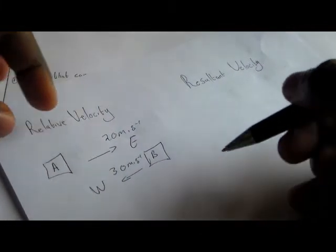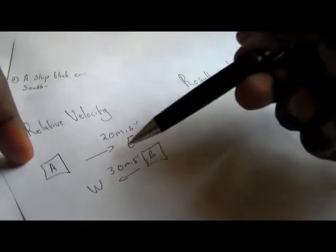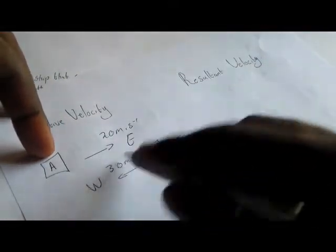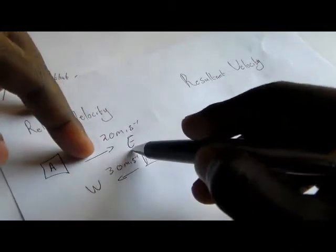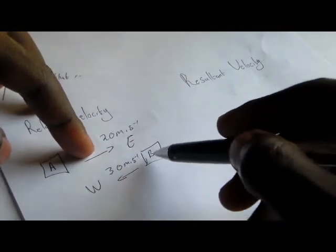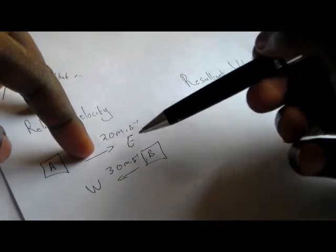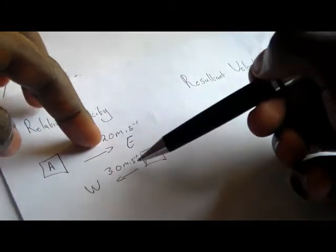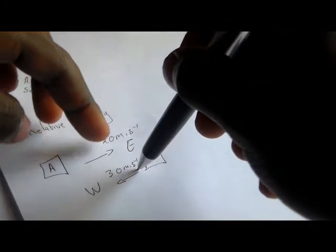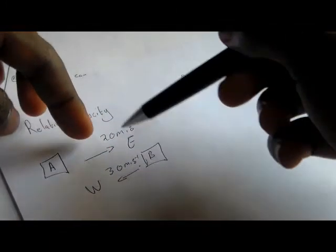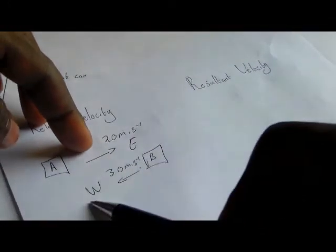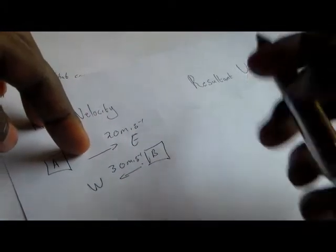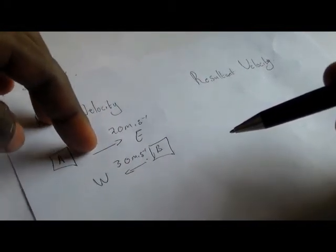If we are talking about the relative velocity, we are talking about the relationship between these two bodies, or the difference in speed. Like, if you are moving on a highway and you are passing a car moving at a speed of 30, you will see this car traveling at a speed of your speed plus its speed. So you will see this car moving much faster than it is moving in reality.